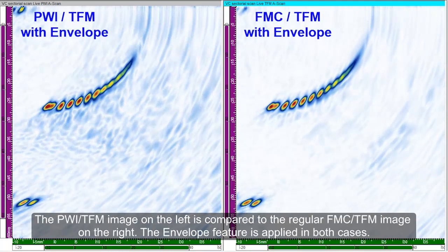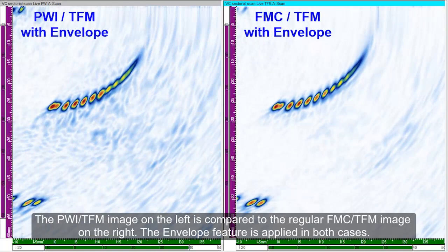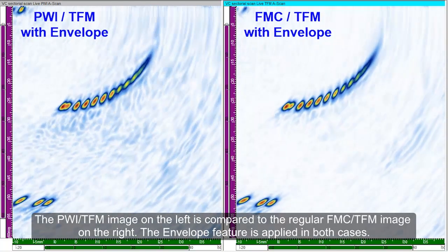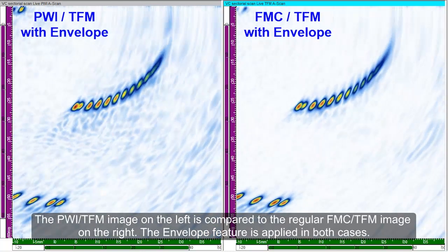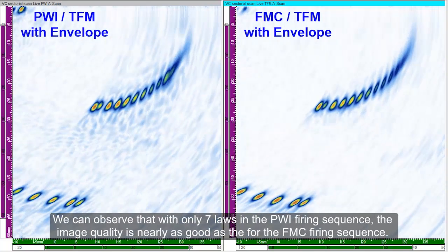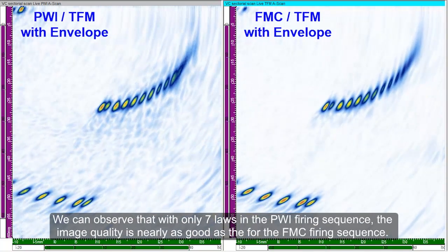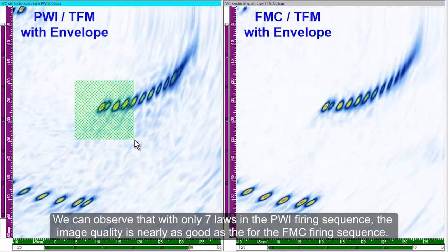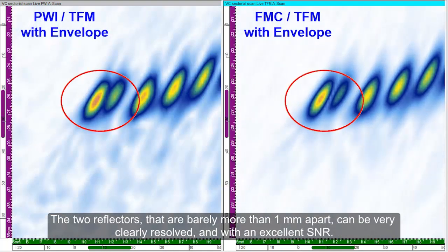The PWI TFM image on the left is compared to the regular FMC TFM image on the right. The envelope feature is applied in both cases. We can observe that with only 7 laws in the PWI firing sequence, the image quality is nearly as good as for the FMC firing sequence. The two reflectors, that are barely more than 1 mm apart, can be clearly resolved with an excellent signal-to-noise ratio.